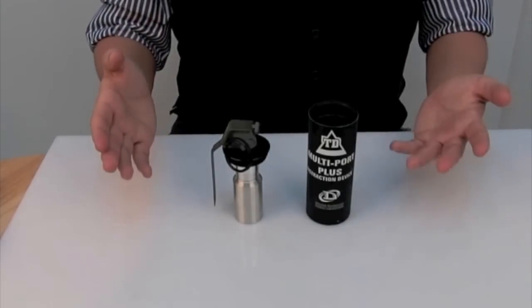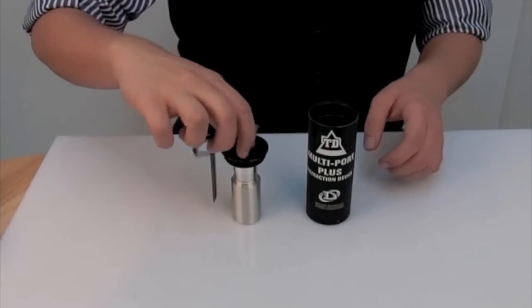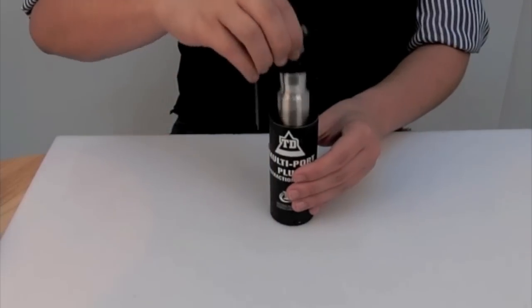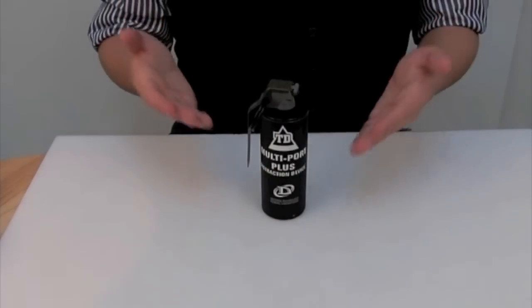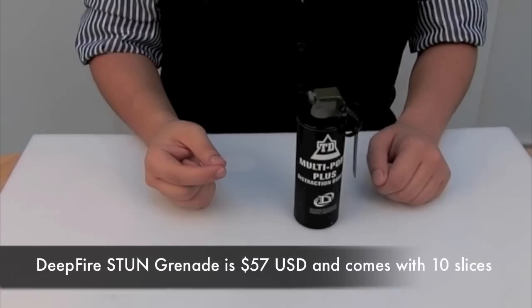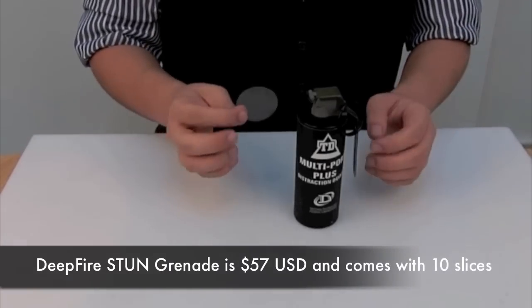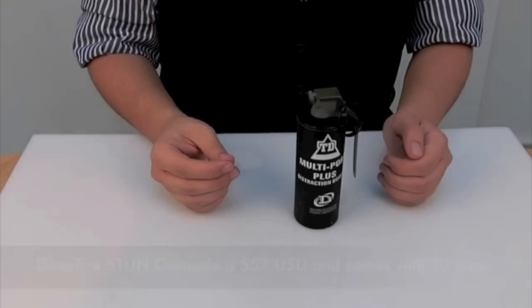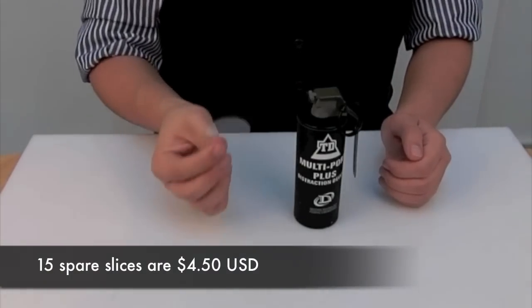The final step, very simple: implanting the core into the housing. And this is as simple as screwing on a bottle cap. The grenade is now good to go. The grenade comes packaged with 10 phonation slices and costs $57. Phonation slices are available for separate purchase in packs of 15 for $4.50.